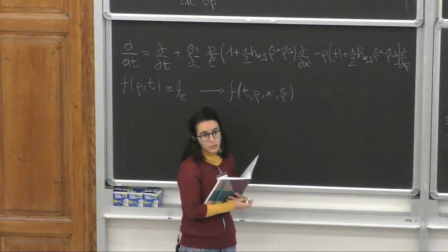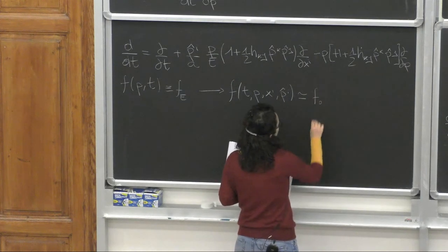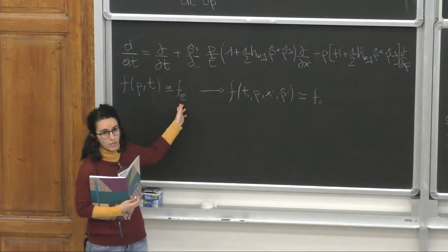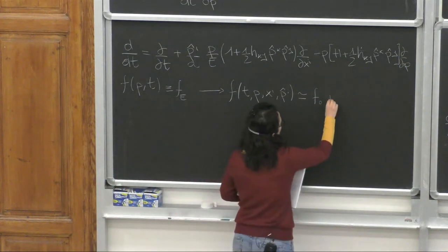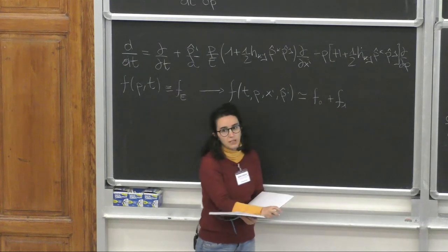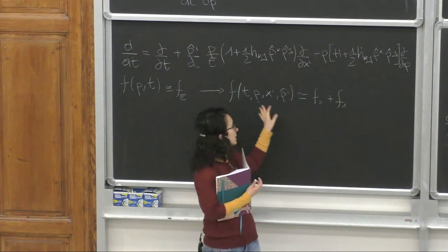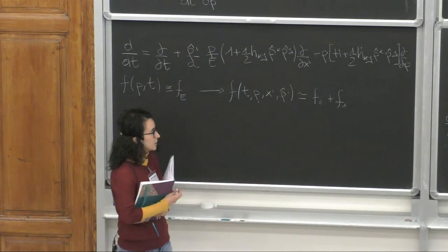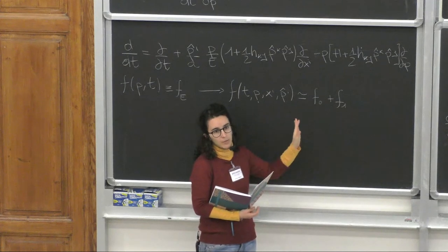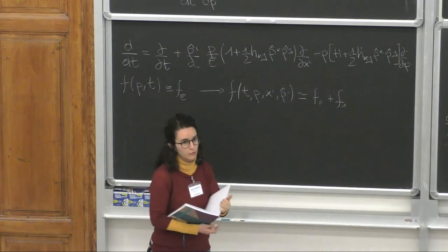We are interested in linear order perturbations, so we expand the full distribution function as the sum of two terms: F0, which is the equilibrium distribution in the homogeneous and isotropic universe, times a small perturbation F1. While F0 retains the usual dependency on time and magnitude of the momentum, F1 in principle retains dependency on all four variables: time, position, momentum magnitude, and direction. This decomposition is analogous to the decomposition of the metric into the homogeneous and isotropic part plus a small perturbation.